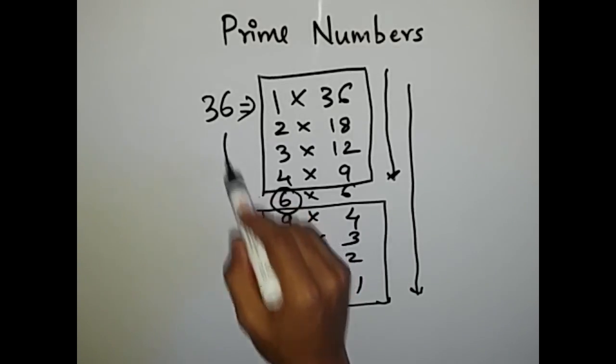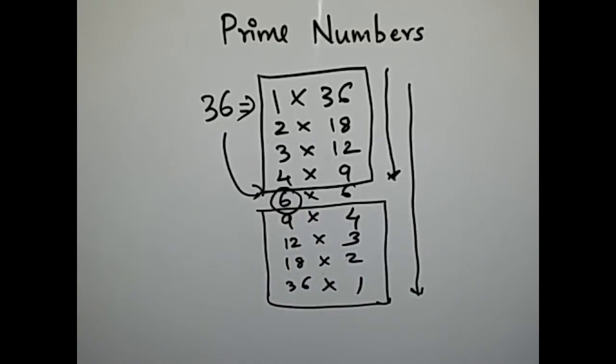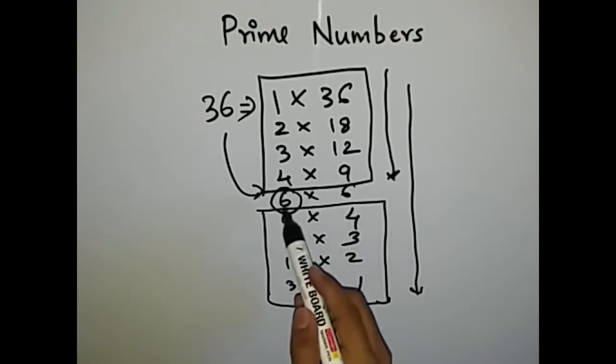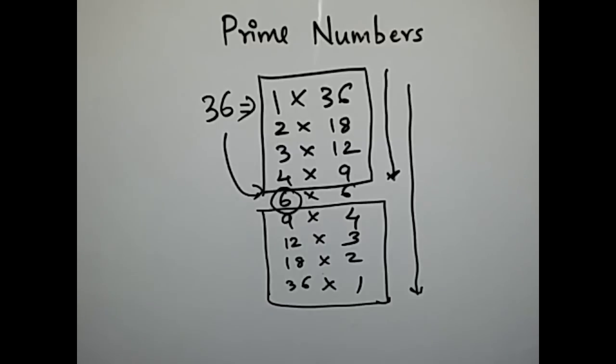Now what is so special about this number 6? We notice that 6 is the square root of this number 36. So this is the main logic of this sum that we just only have to make a loop from i equal to 2 to i equal to square root of that number.